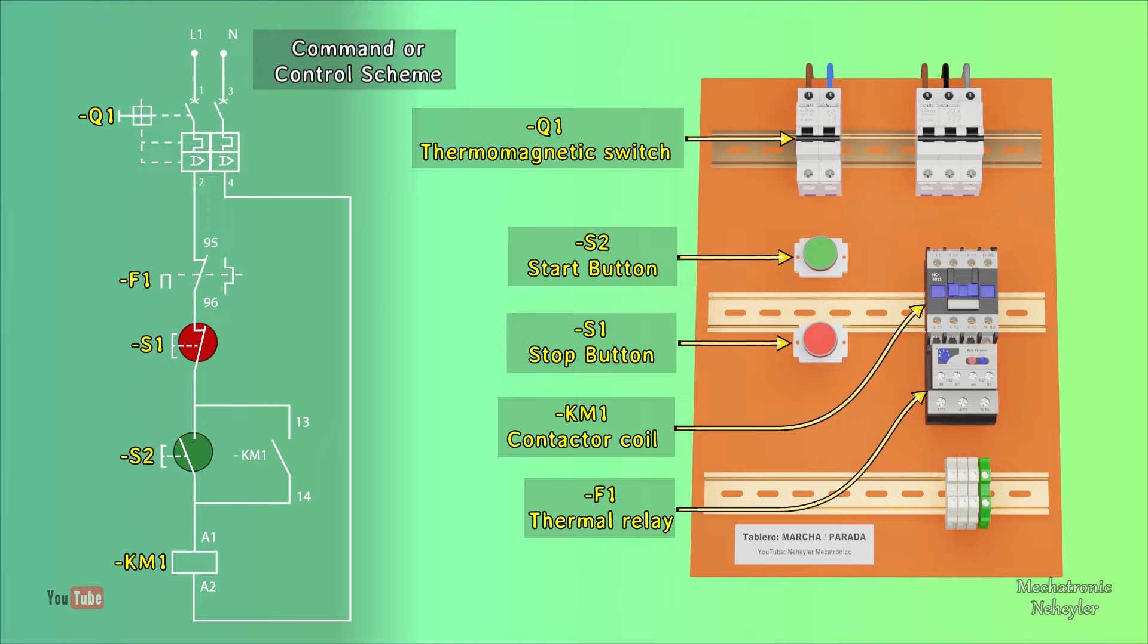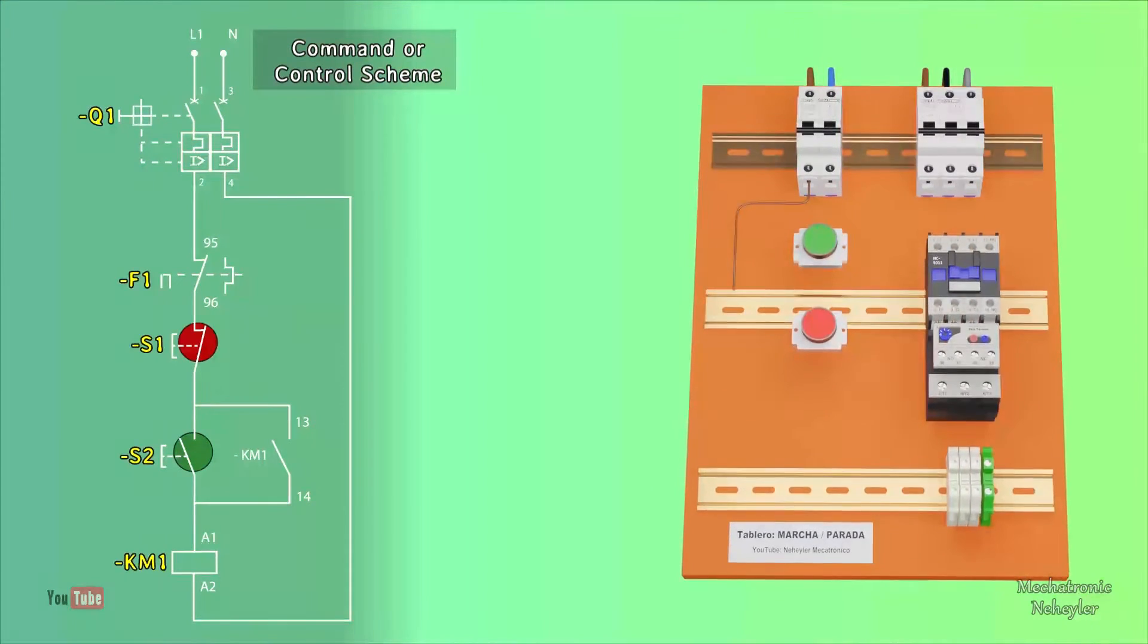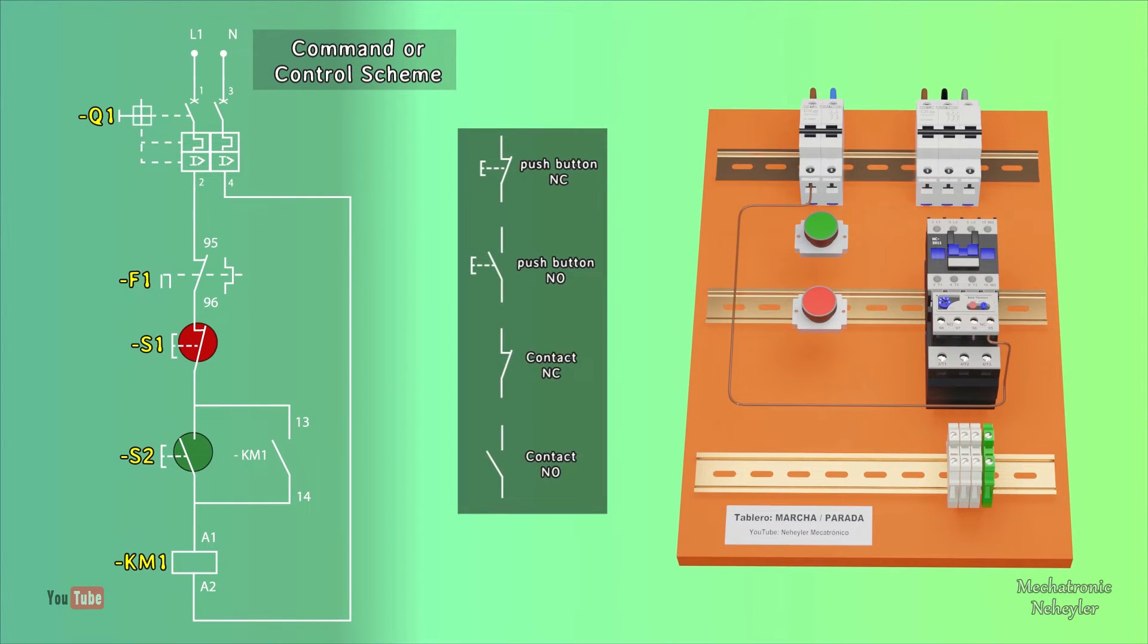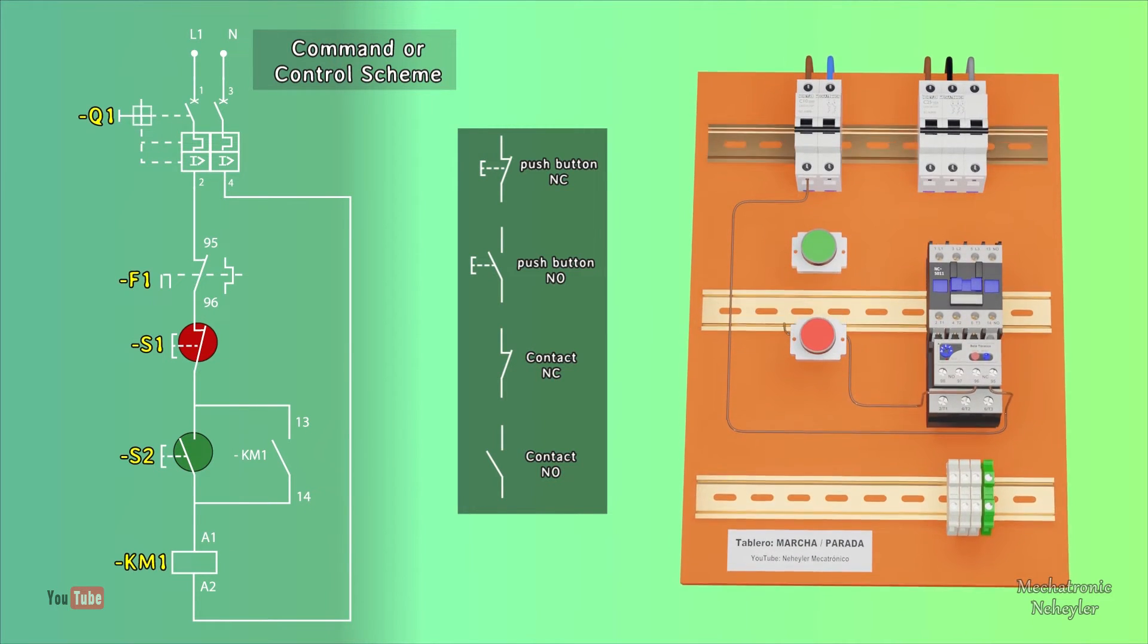For the wiring, we are going to be guided by the following scheme. The phase cable is taken to terminal 95 of the thermal relay contact and from terminal 96 it is taken and connected to both buttons and then to terminal A1 of the contactor coil.